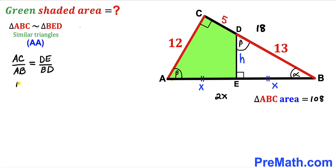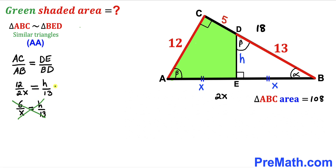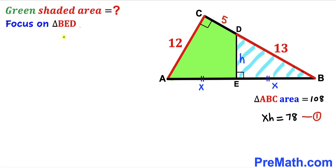Simplifying 12 over 2x, we get 6 over x equals h over 13. Cross-multiplying gives us x times h equals 6 times 13, which equals 78. We'll label this as equation number 1.